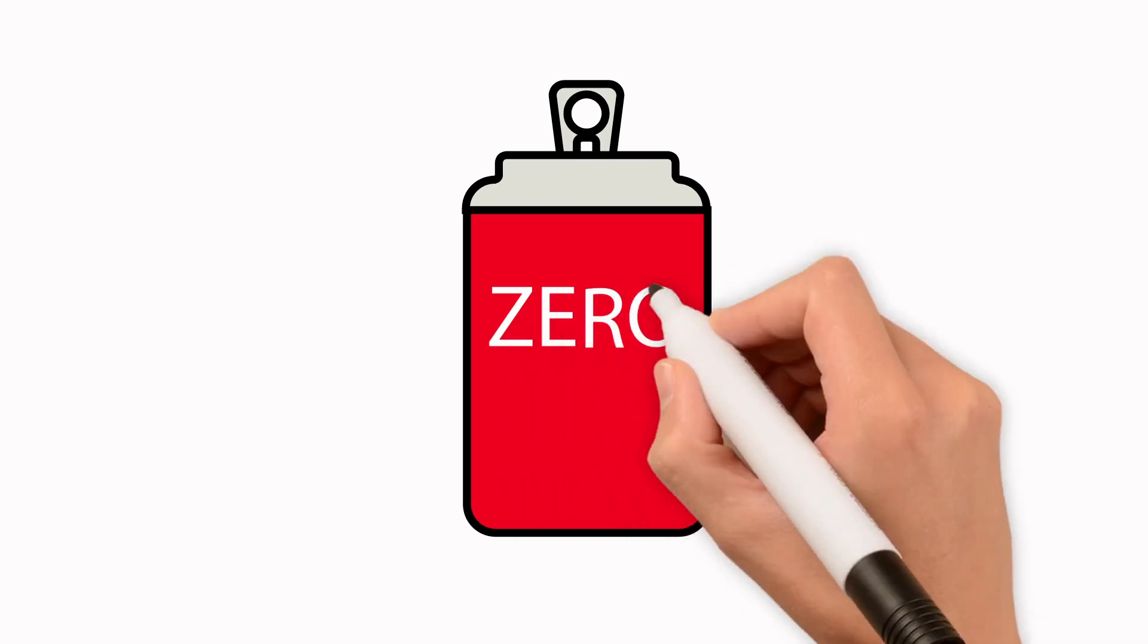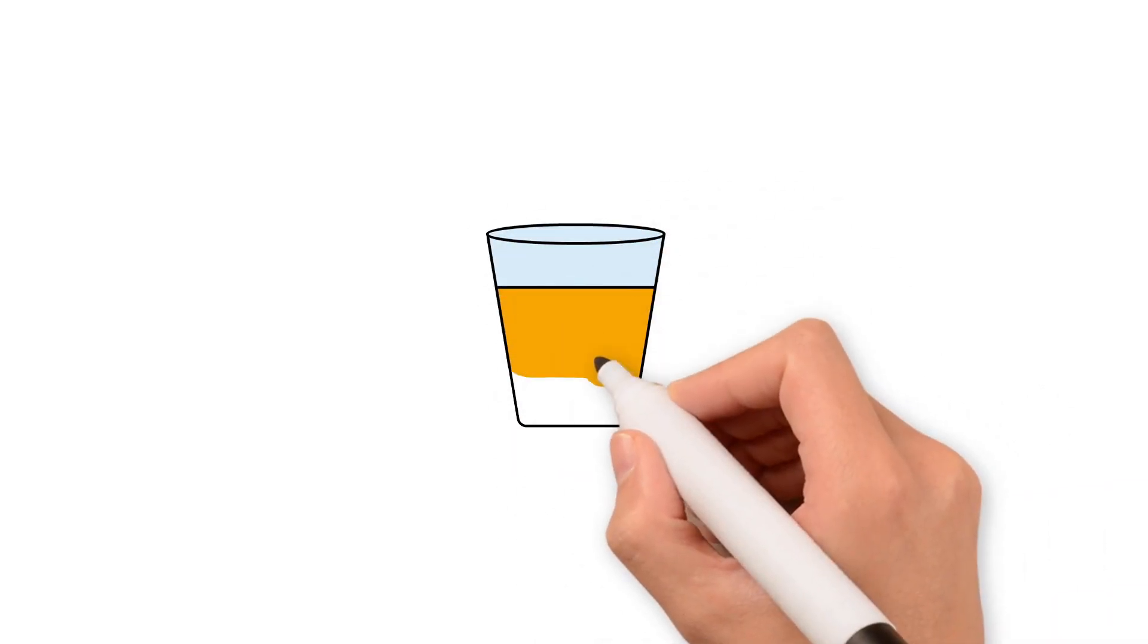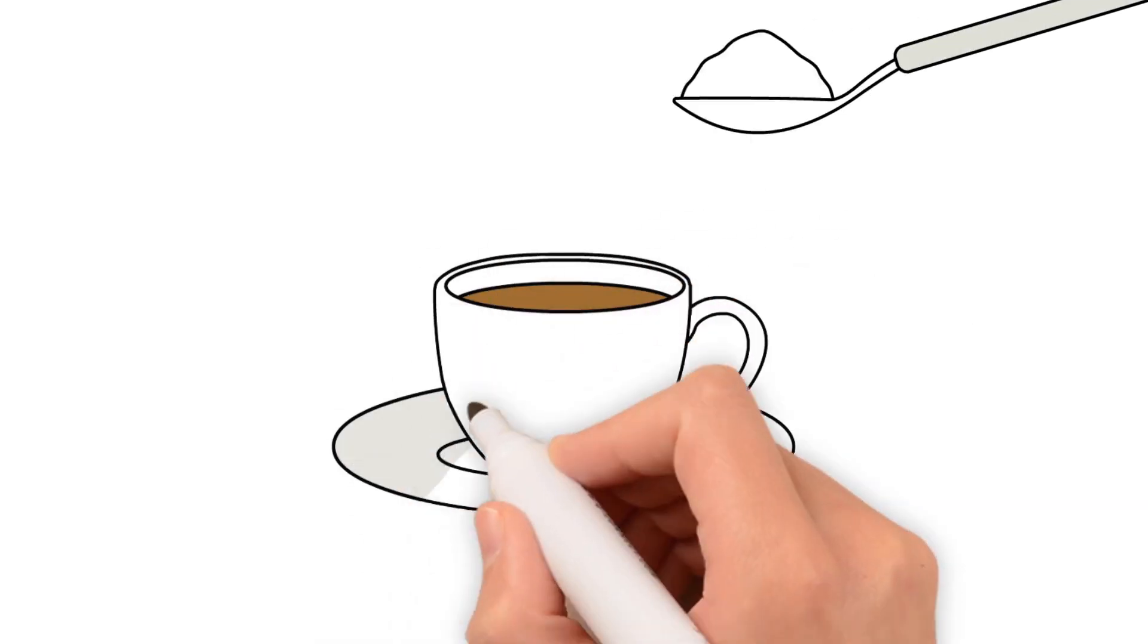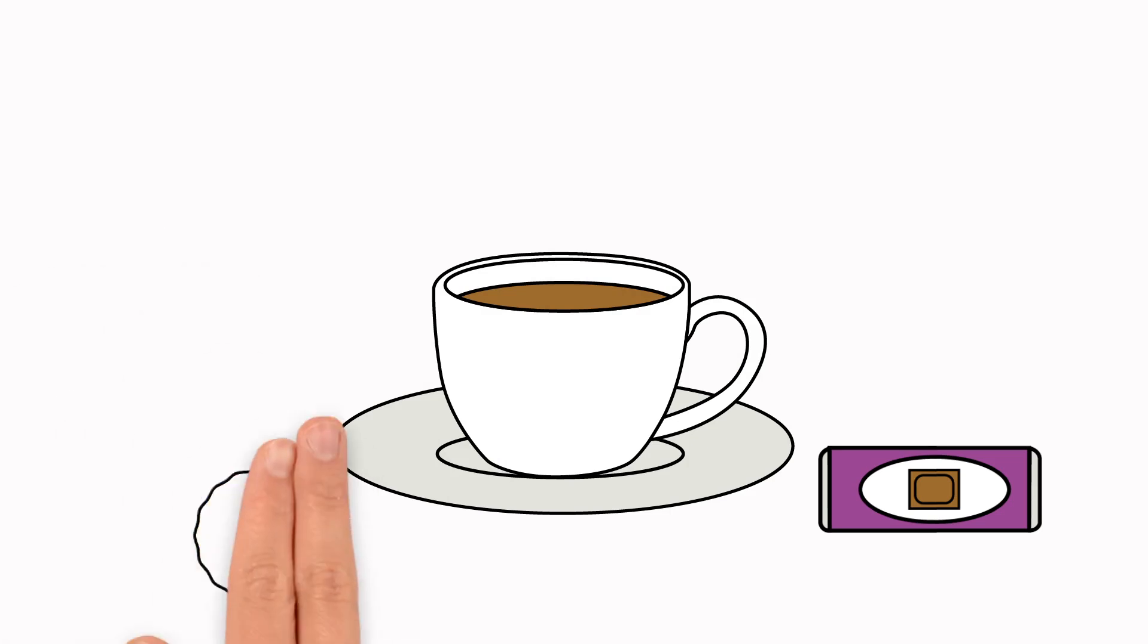Choose sugar-free versions of soft drinks and stick to no more than one small glass if you drink juice. Don't add sugar to your tea or coffee. Avoid sugary snacks or stick to small portions.